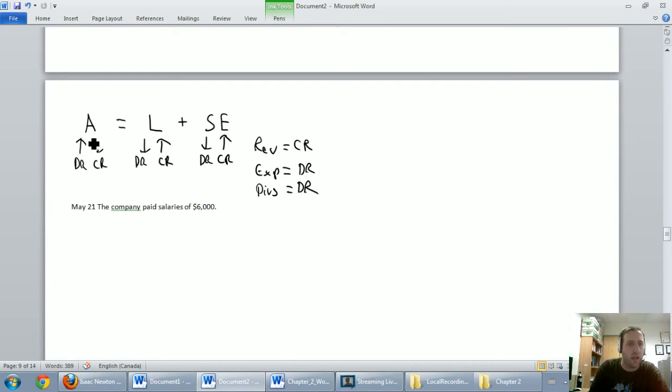Cash is going down. Cash is an asset. We've got an asset going down. Let's credit cash. Again, I'll leave room for the debit. Credit cash, $6,000. Our debit here is, well, what do you think salaries are to a company?